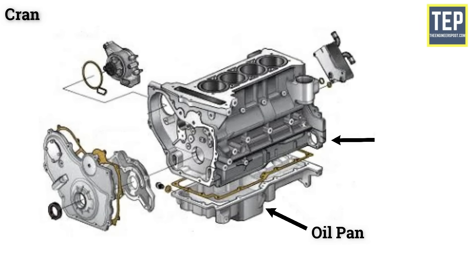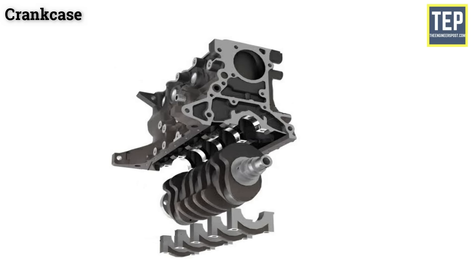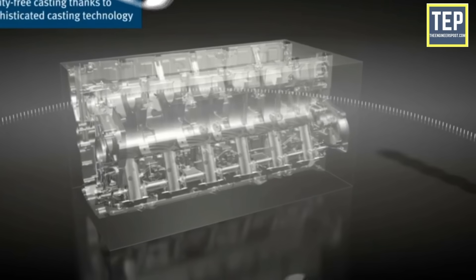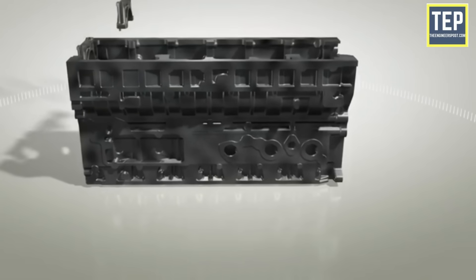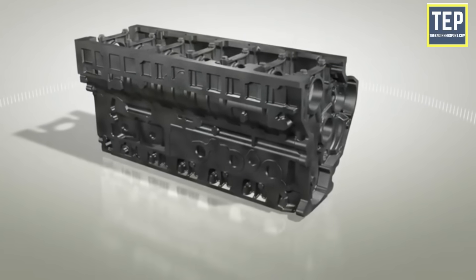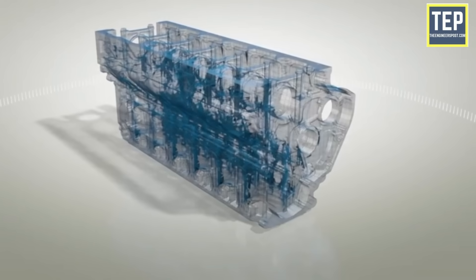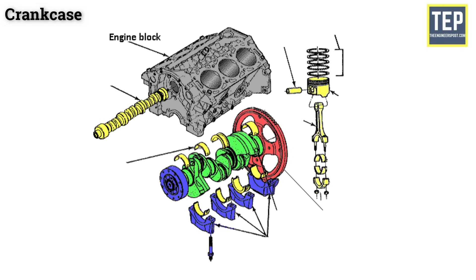The oil pan and the lower part of the cylinder block together are called the crank case. It is the bottom portion of the cylinder block in which the crankshaft is fitted, made of gray cast iron or aluminium. It can be cast integrally with the block or cast separately and attached with bolts. Shaped like a box with no bottom surface, the crank case provides support for the main journals and bearings of the crankshaft, maintaining alignment of their axes of rotation under various engine loads.